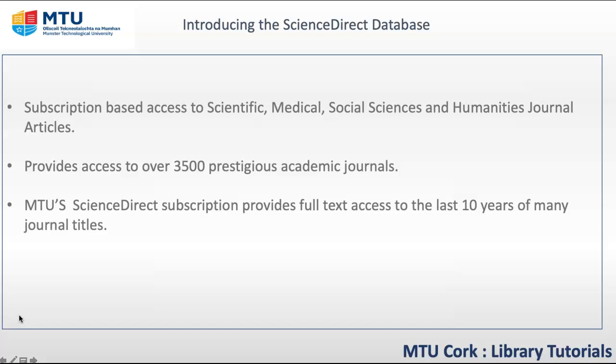Journals are grouped together into four main sections: Physical Sciences and Engineering, Life Sciences, Health Sciences, and Social Sciences and Humanities. In total, ScienceDirect provides access to over 3,500 academic journals.